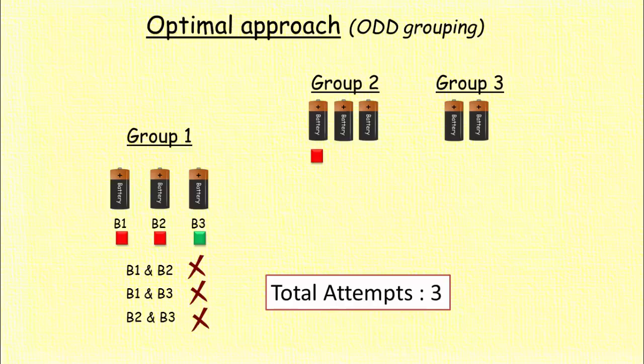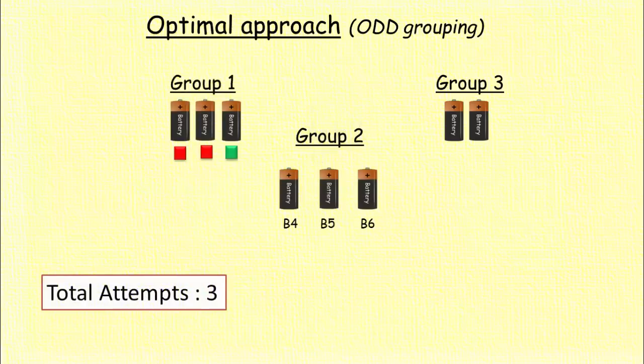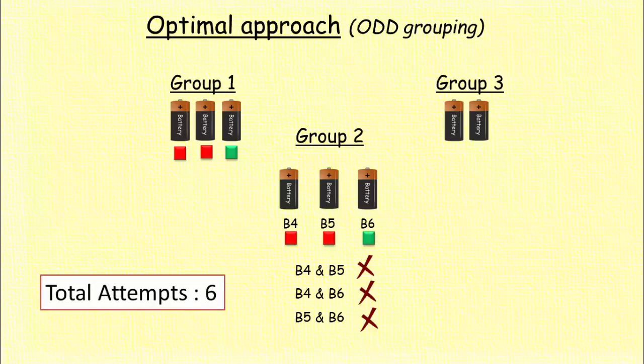Similarly in the second group make three attempts with three combinations: B4-B5, B4-B6, and B5-B6. Again consider the worst case that none of the combinations works. And that can happen only if this group as well has only one charged battery and other two batteries are not charged.